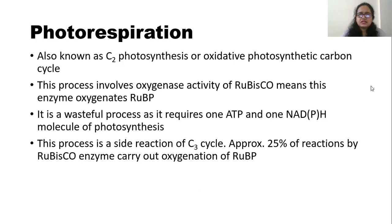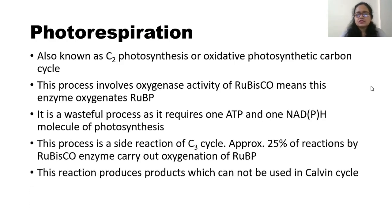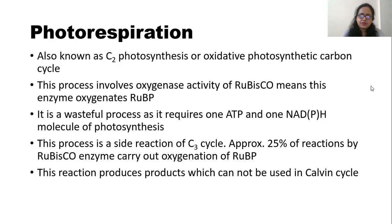This process is a side reaction of the C3 cycle, and approximately 25% of reactions by RuBisCO carry out the oxygenation of RUBP. This reaction produces products which cannot be used in the Calvin cycle, also known as the C3 cycle, where carbon dioxide is fixed and carbohydrate is synthesized in C3 plants.